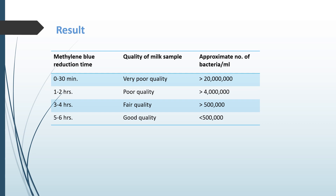Methylene blue ka jo reduction time hai woh 0 to 30 minutes hai, that means jo milk sample hai woh very poor quality of milk hai, aur approximate number of bacteria per ml mein more than 2 crores hongi. Agar methylene blue ka reduction time 1 to 2 hours hai, that means jo milk sample hai woh poor quality of milk hai, aur approximate number of bacteria per ml mein more than 40 lakhs hongi.